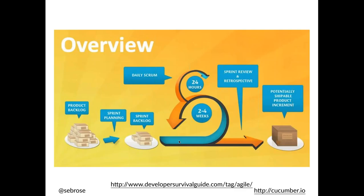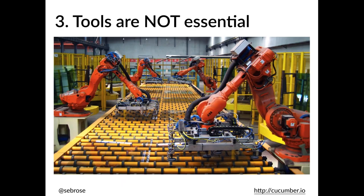This Three Amigos meeting fits into a standard Scrum-style development process. Some organizations use it to replace sprint planning. Another model that works well — if you have the availability of a product owner or business analysts on a regular basis — is to schedule very short Three Amigos sessions daily or every other day, so that during a sprint you can start working on stories that are candidates for the next sprint backlog. The wonderful thing about a short meeting is that it's a short meeting.